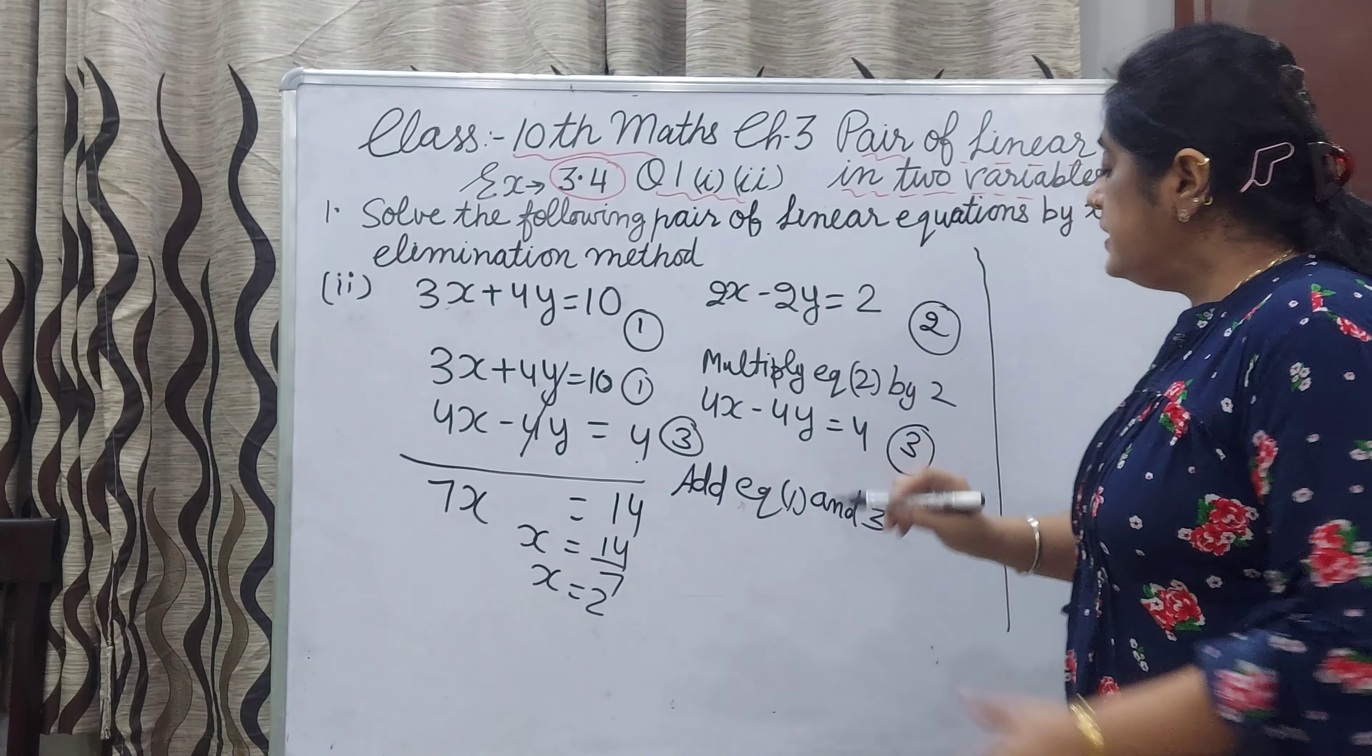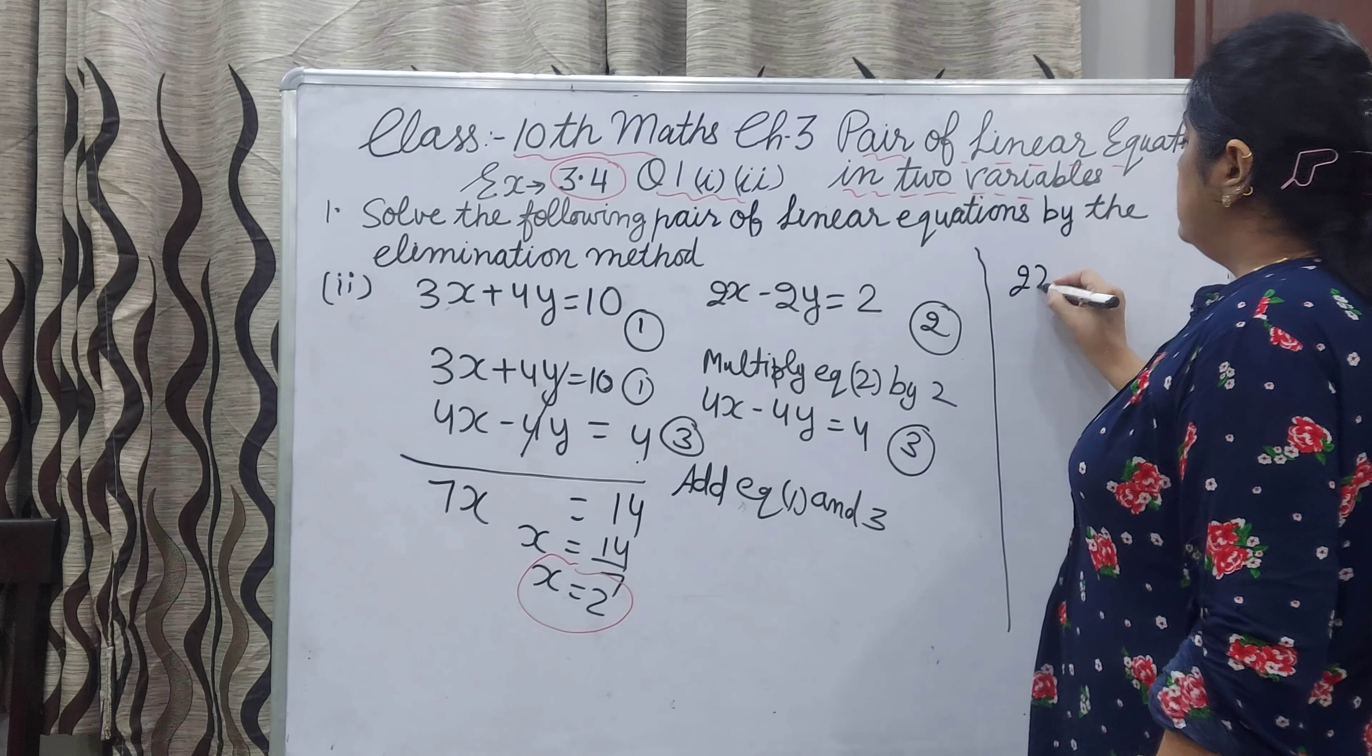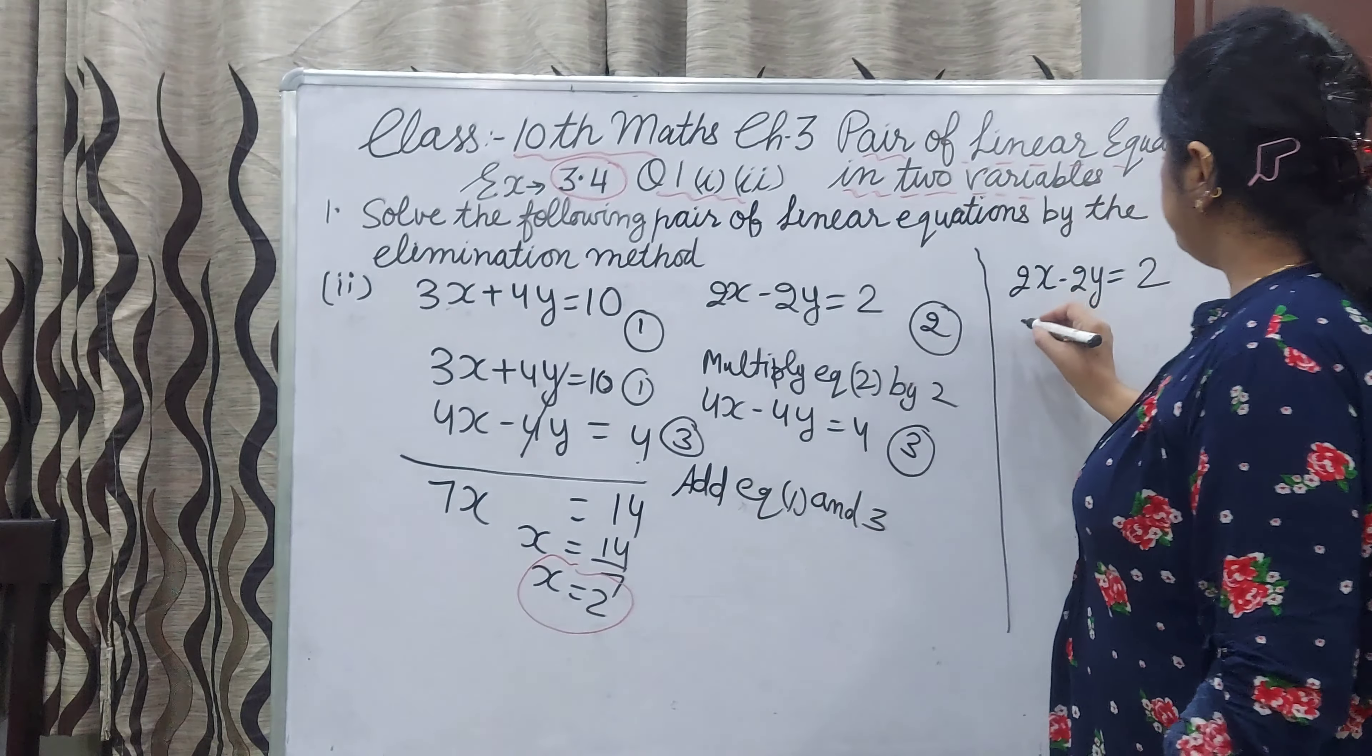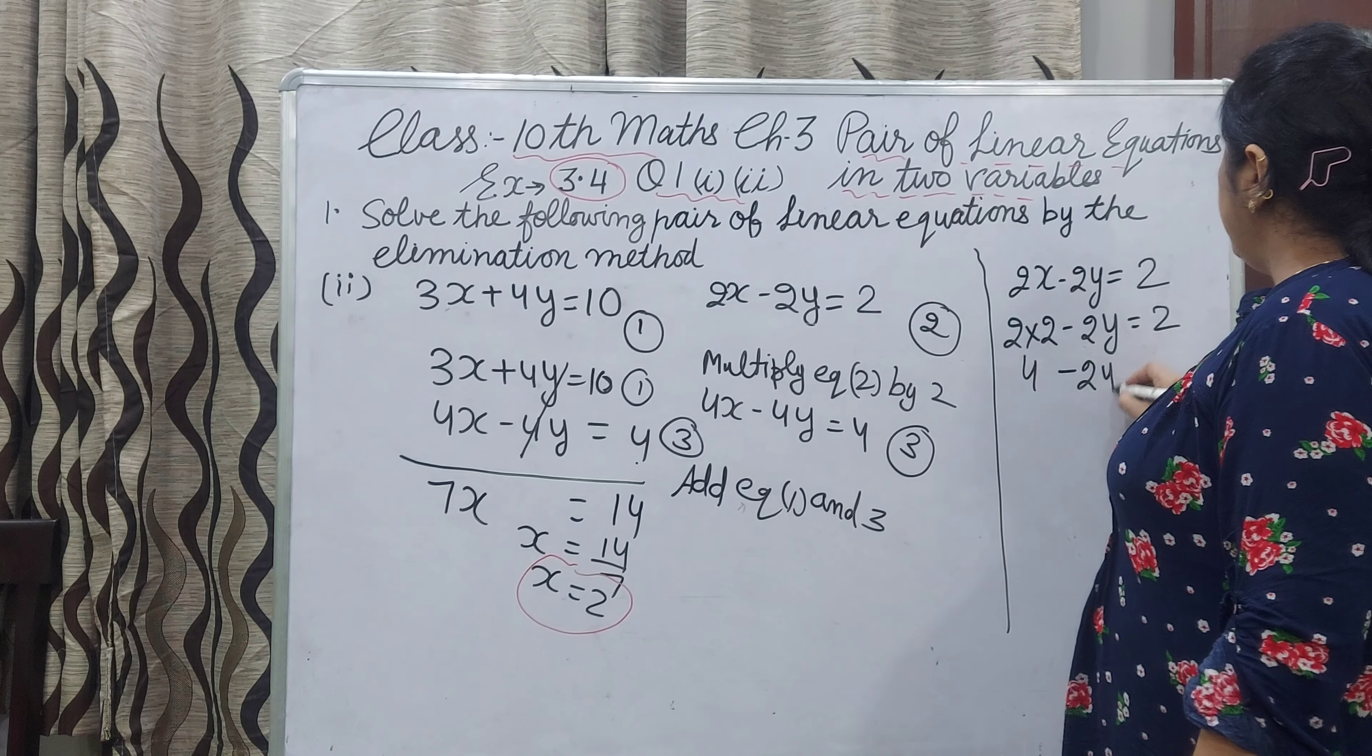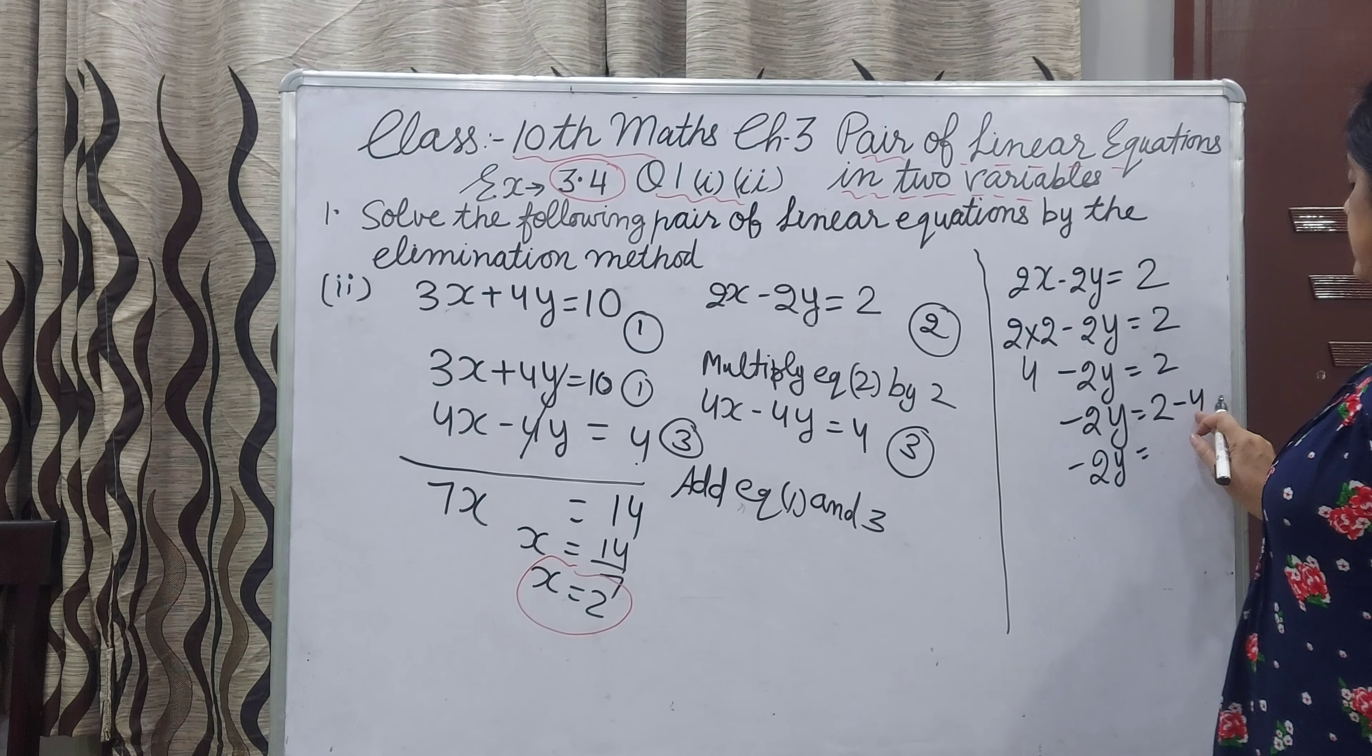Now this x value you can put in any equation, either 1, 2, or 3. I am putting the value in second equation: 2x minus 2y equal to 2. Here x value I will put 2. 2 multiplied by 2 minus 2y equal to 2. 4 minus 2y equal to 2. This 4 is positive here, here it will come and be negative. Minus 2y. This 2 is positive, 4 is negative, minus 2 will be left.